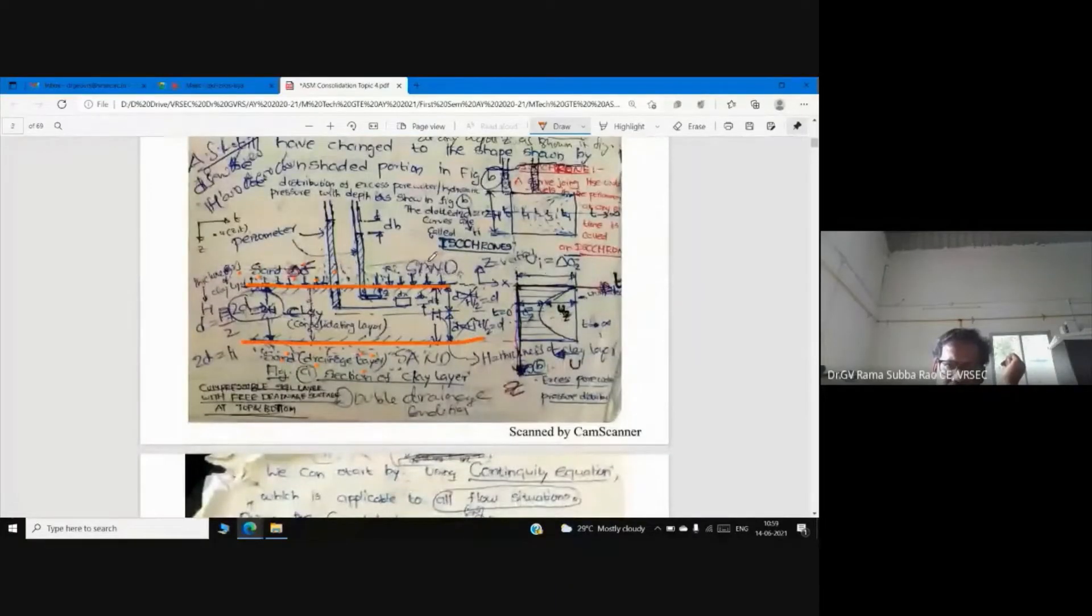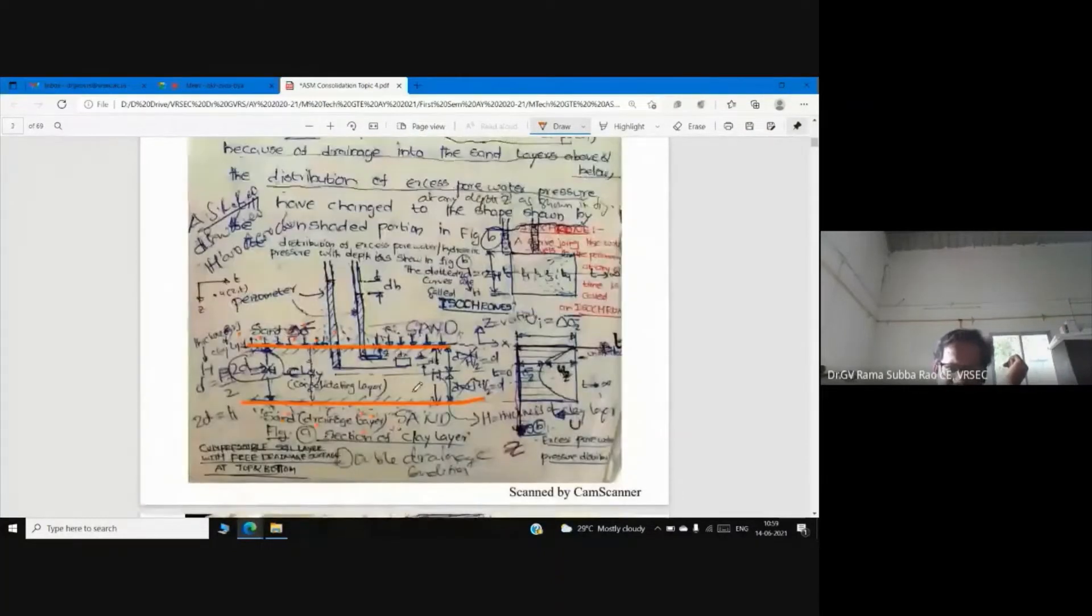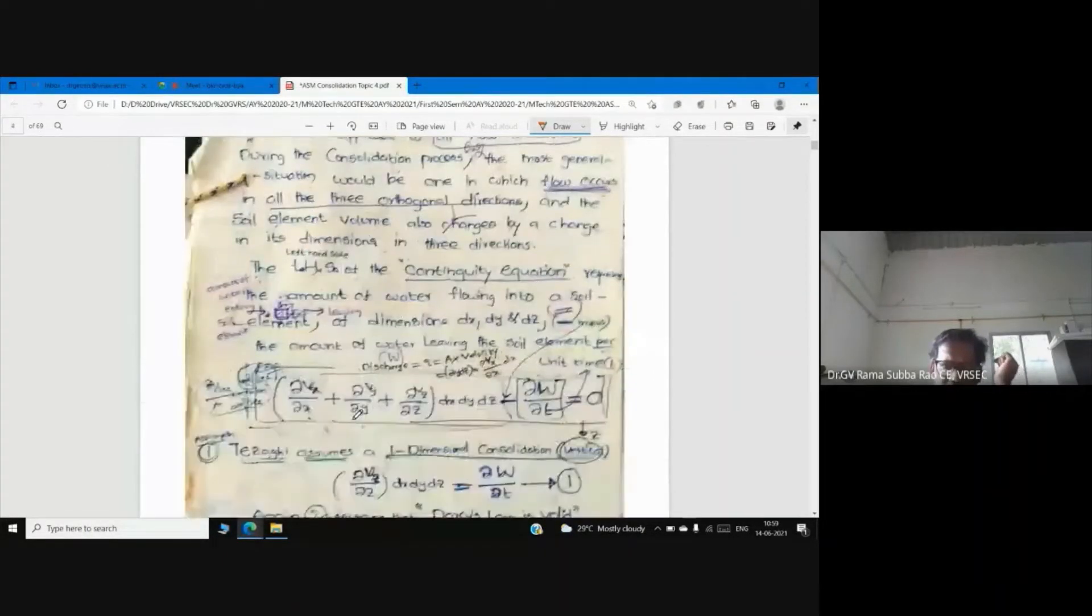So draw this figure. Now you see what we are going to do - we take one soil element here, with thickness dz, because I told you repeatedly this is z direction, depth direction. The thickness of the clay layer is H. This element has dimensions dz in the vertical direction and dx in the x direction. I have taken a small element.